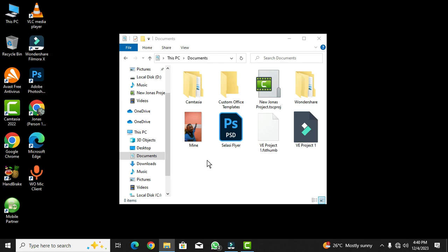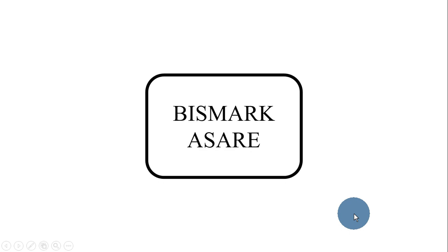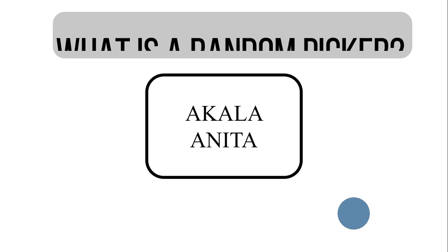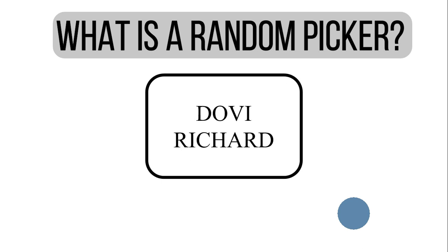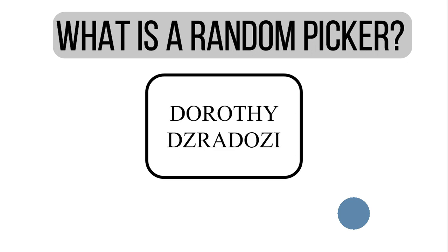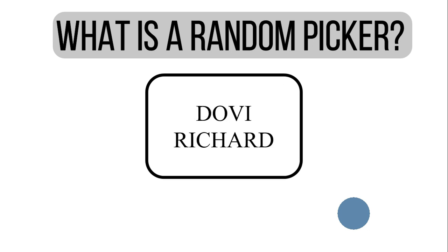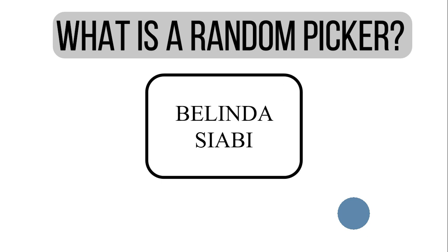Welcome to Banahene Tutorial Collections. In this video we are going to learn how to create a random picker in Microsoft PowerPoint, which is a presentation software. A random picker, by my personal definition, is a mechanism or system designed to randomize items, objects, or individuals to perform tasks at a given time. According to Google, a random picker is a versatile tool that helps you make tough decisions or randomly select items from a range of items.